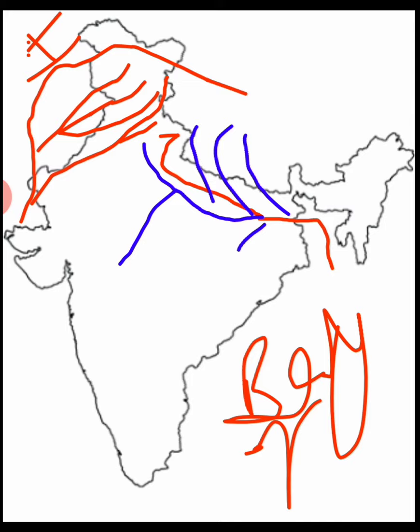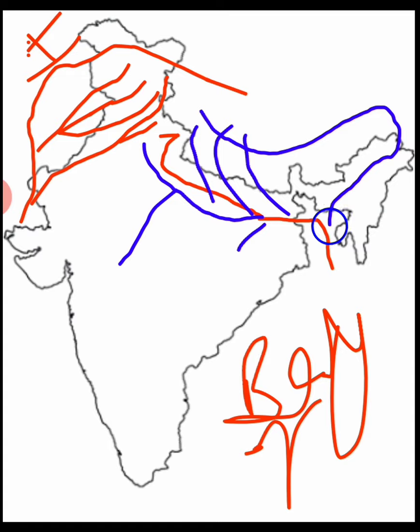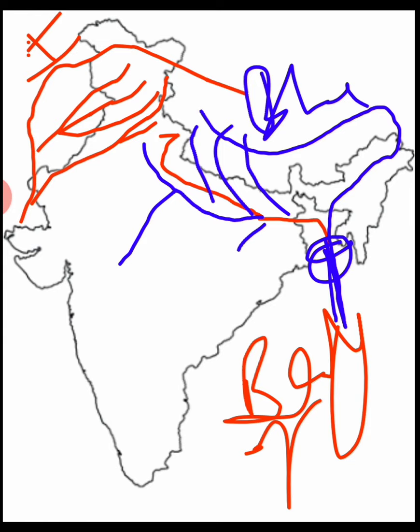But if we talk about the main rivers, the third major river in North India is Brahmaputra. Brahmaputra river starts in China — in Tibet — flows through India, and in Bangladesh it meets the Ganga river and flows into the Bay of Bengal.